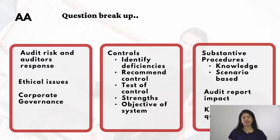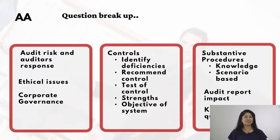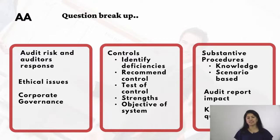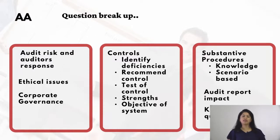The next probable area is controls. The first three elements are guaranteed: identify and explain the deficiencies, recommend a control, and for each control explain what test of control you will perform. The other two — strengths and objectives — may or may not come, but be prepared. Strengths means identifying existing controls, explaining what risk is being reduced, and objectives are the reasons why a control is put in place.